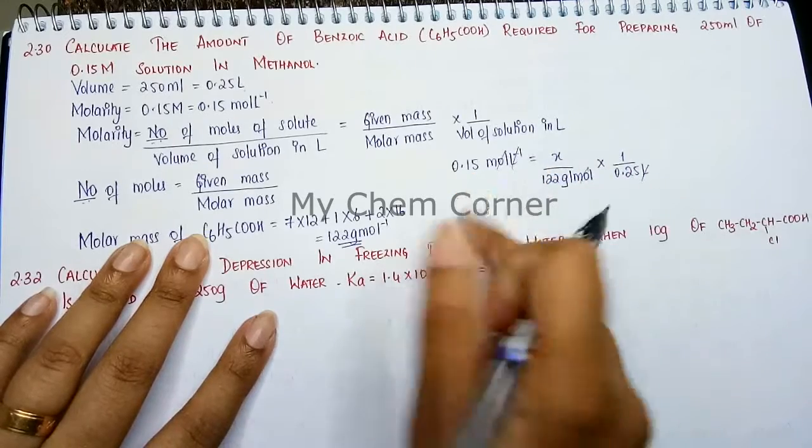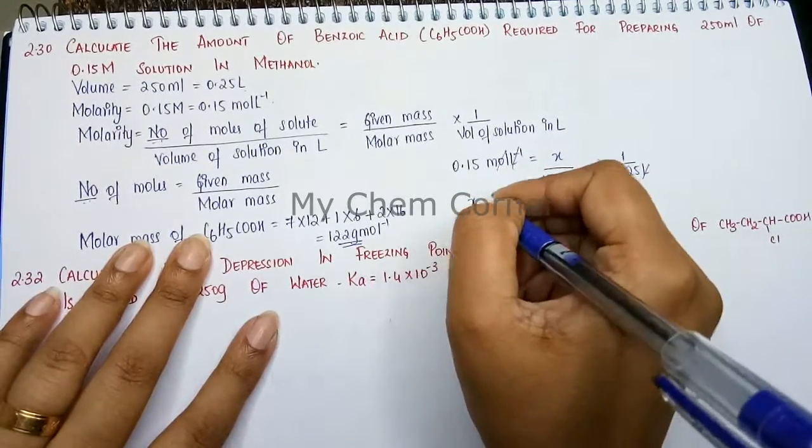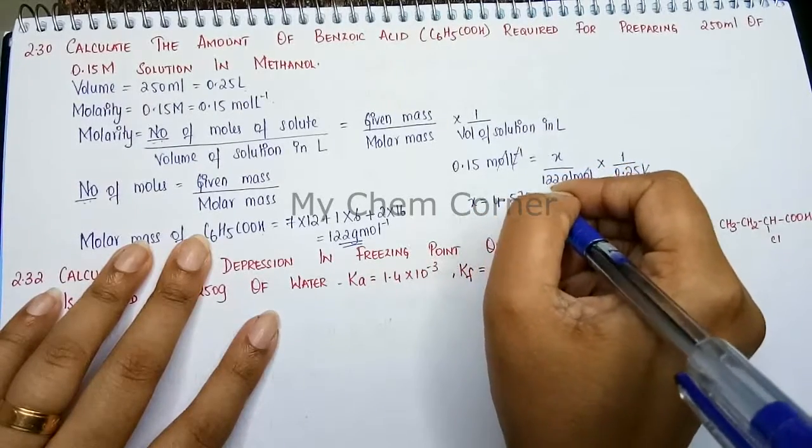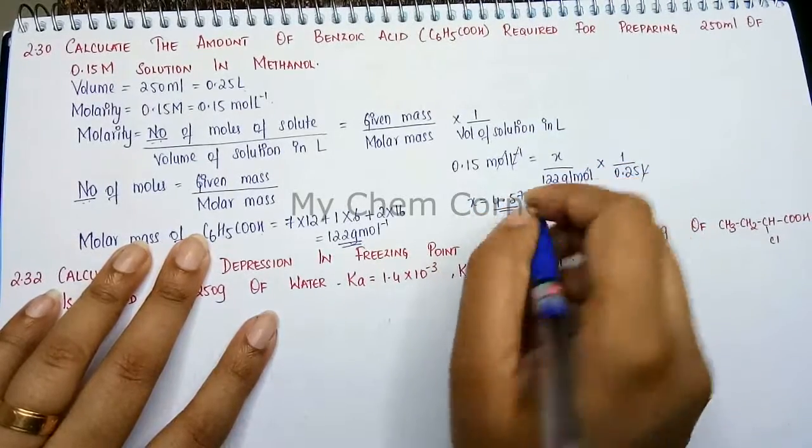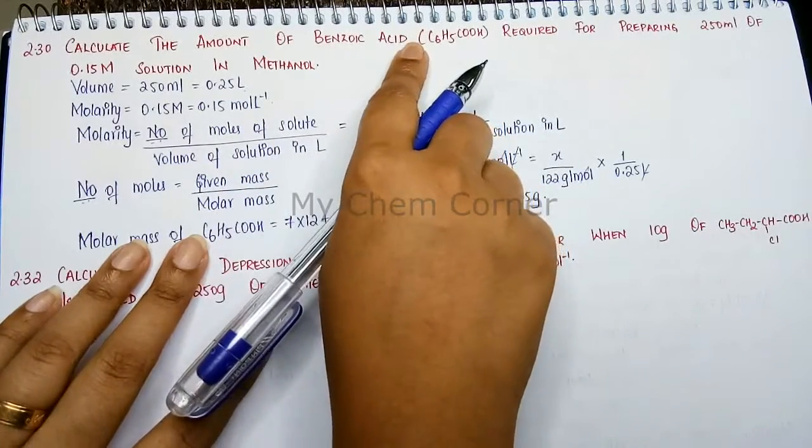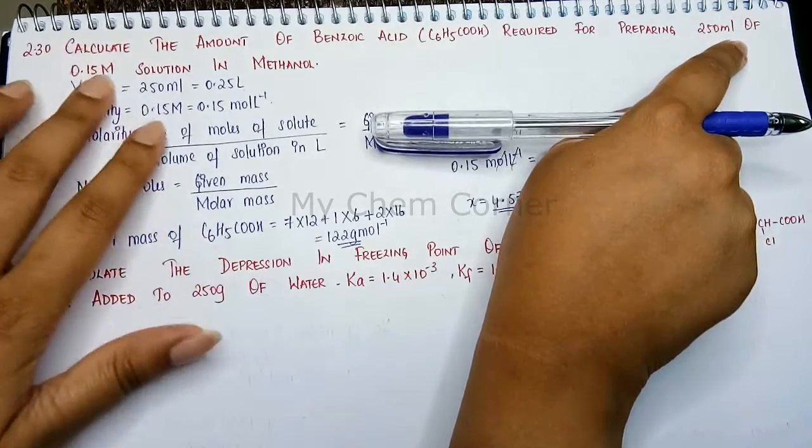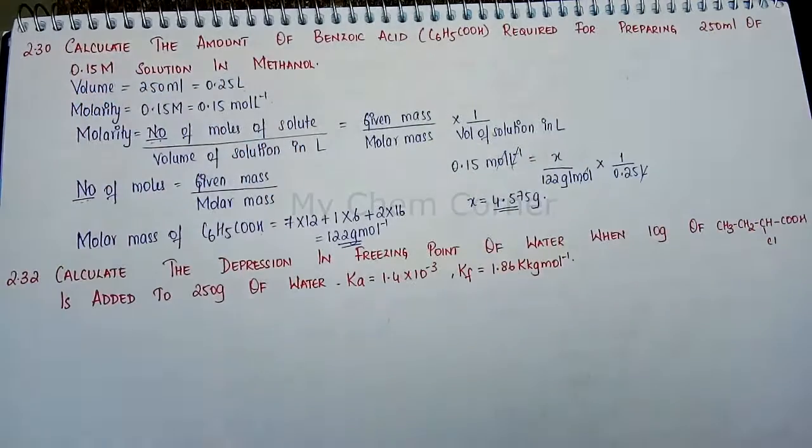This is the amount of benzoic acid required for preparing 250 ml of 0.1 molar solution in methanol.